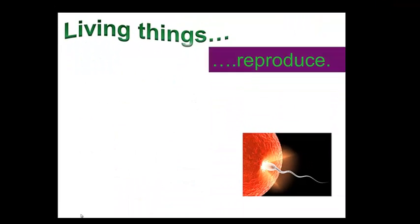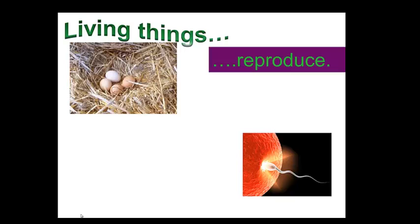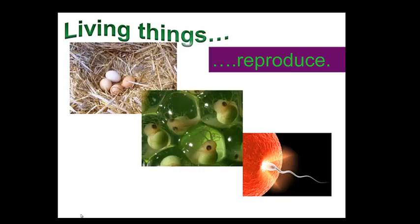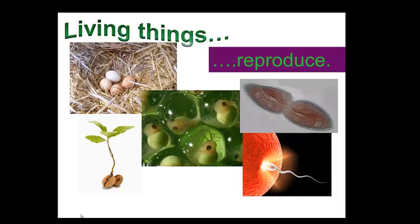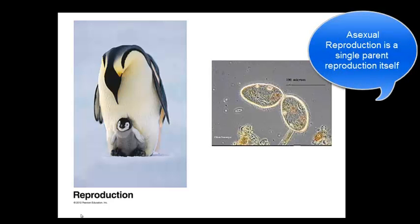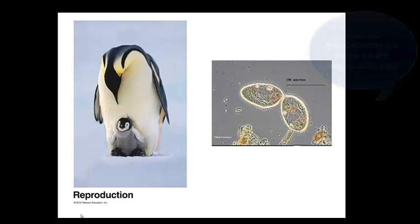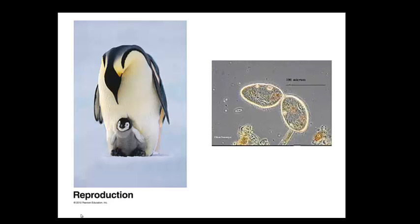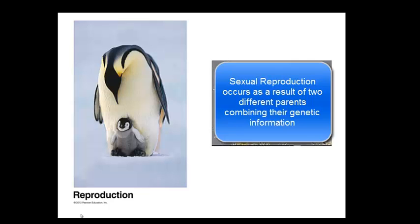Living things reproduce. Reproduction is the ability to produce new organisms of the same kind. Eggs are involved in reproduction — here are eggs with toads in them — the acorn to the oak tree, and here we see a bacterium actually reproducing. This type of reproduction is referred to as asexual reproduction, in which a single parent reproduces itself. What we typically think of in reproduction is sexual reproduction, in which two different parents contribute genetic information that results in a completely unique organism.